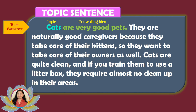The controlling idea 'very good pets' is the point of discussion — why cats are very good pets. The writer gave some reasons or proofs: they are naturally good caregivers because they take care of their kittens, and cats are quite clean and require almost no cleanup. These are the reasons showing cats are very good pets, and are what we call supporting details.